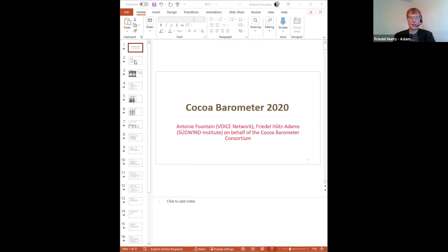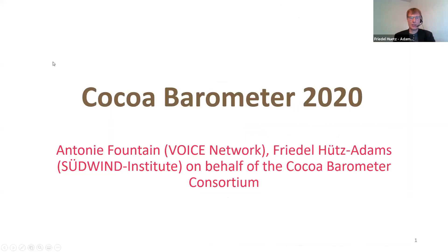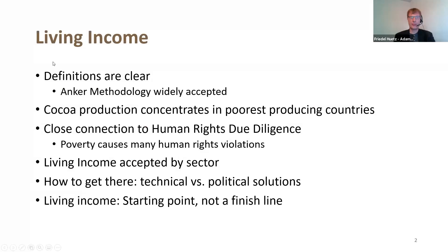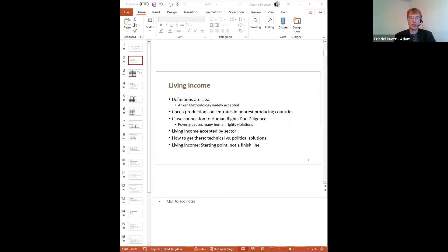Thank you, Anthony. Can you change into the presentation? Thank you. Well, first of all, as Anthony already announced, we will start with living income, but we will make this pretty short. From our point of view, the big step forward we had during the last years is that we have a clearer definition of how to calculate a living income. The income methodology is widely accepted, not only in the cocoa sector but also in other sectors — for example, the banana sector — and we are now making calculations for all major producing countries.